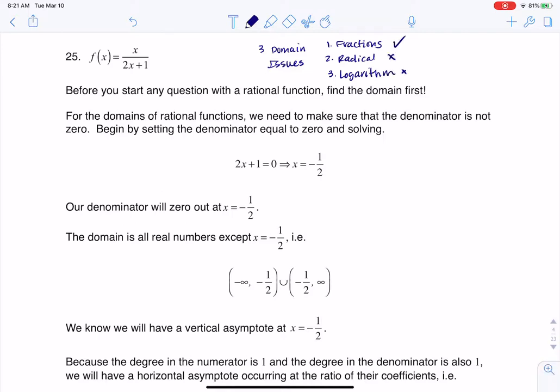I'm going to need to address that, and we always address it by letting our denominator zero out. So here you see me letting my denominator zero out. I'm going to get x equaling negative 1 half, so I have a problem at negative 1 half. My domain is all real numbers except for negative 1 half.